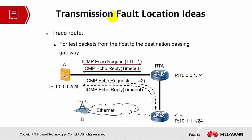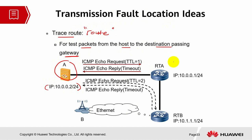Traceroute tests packets from the host to the destination passing through gateways. For example, server A passes through router A and router B before reaching destination B on the Ethernet side. Each router has its own credentials. A request is sent with a TTL (Time To Live) value — starting at 1 millisecond — and upon timeout, it queries each router to check reachability and count the number of hops.